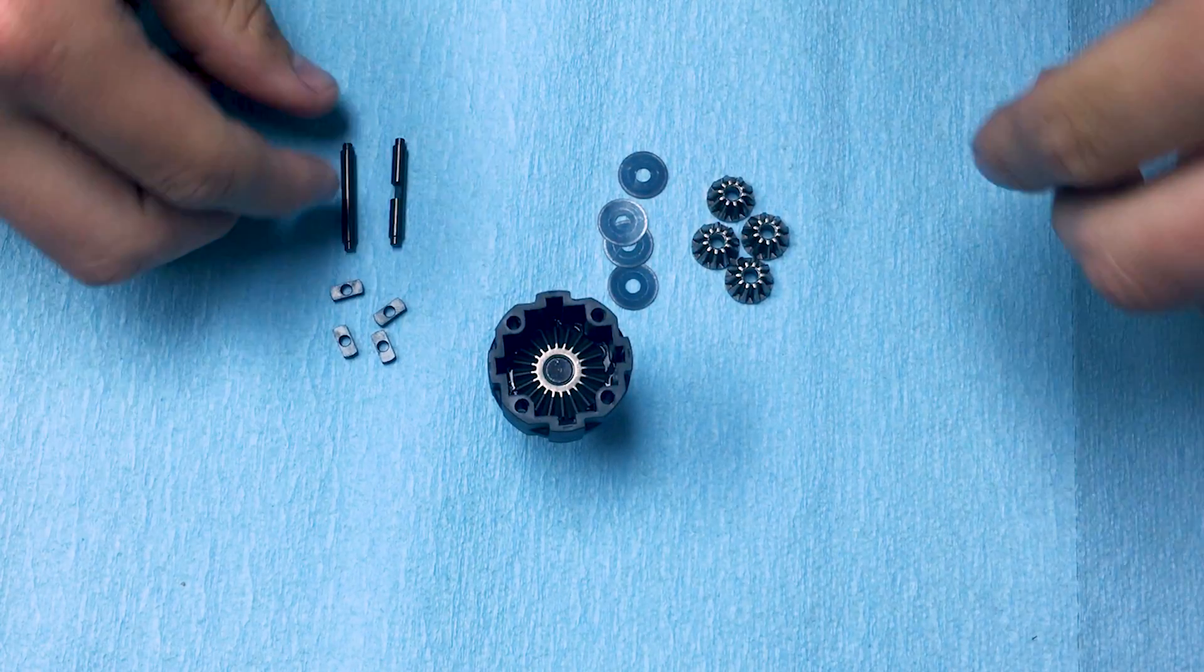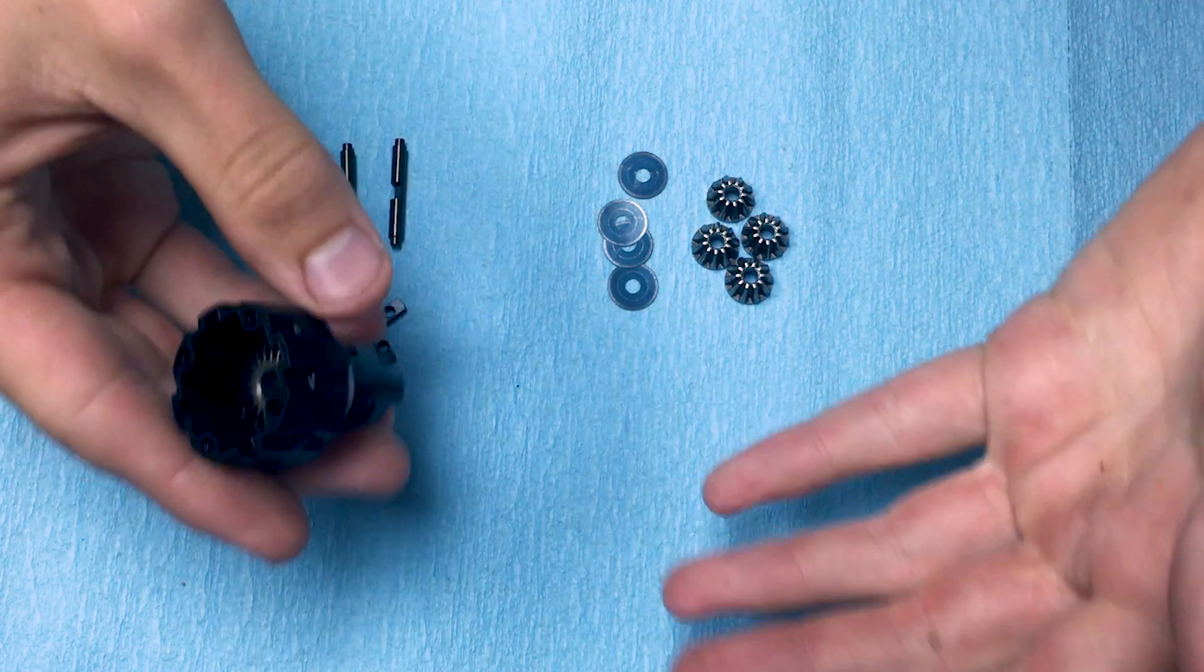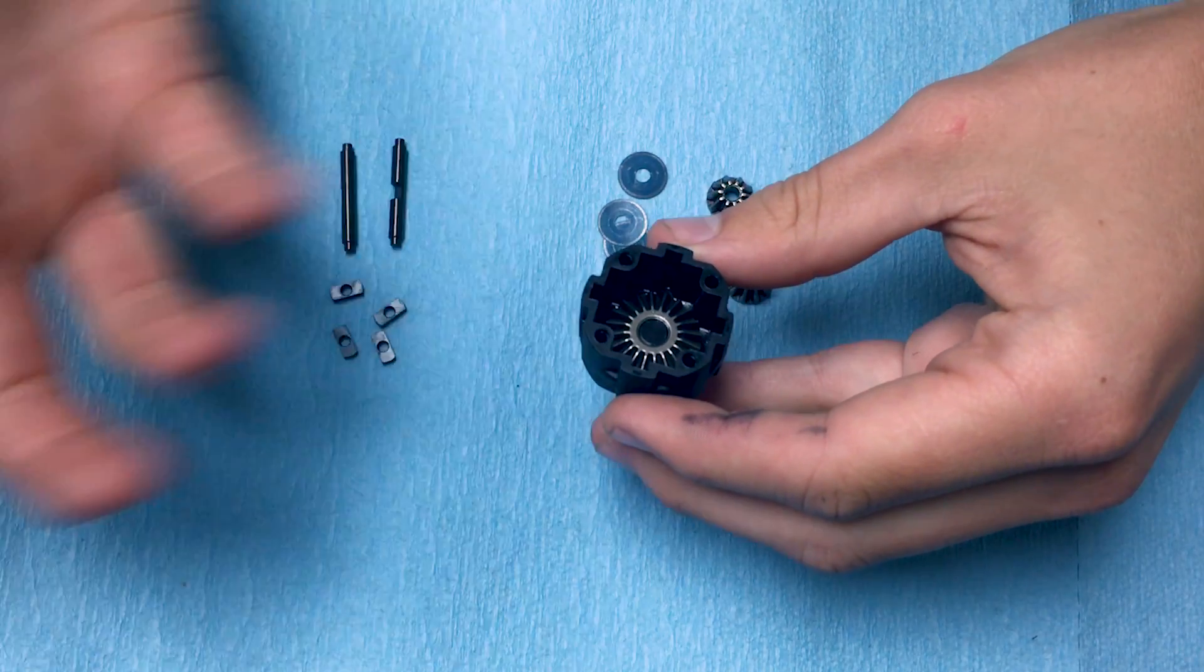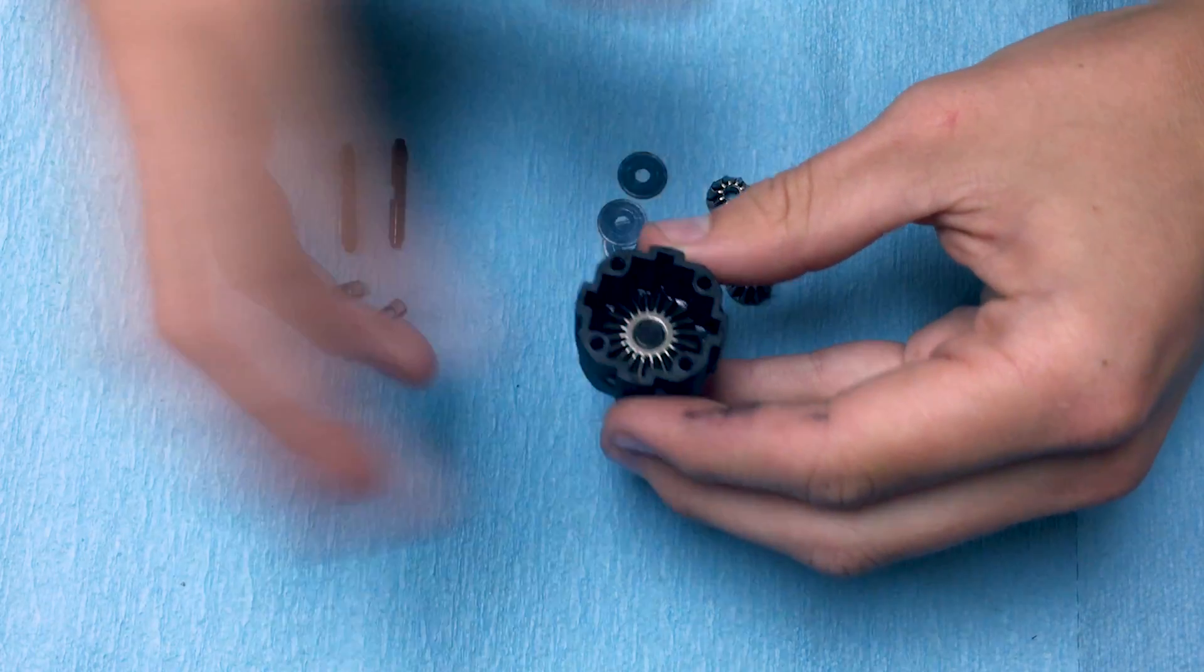So the first thing we're going to do is remove the diff from the car and take the ring gear off, and if this is going into your center diff then you take the spur gear off.